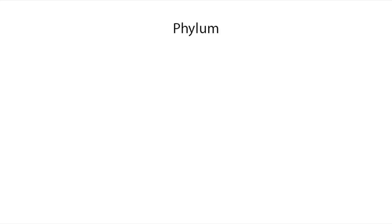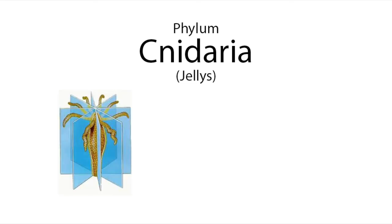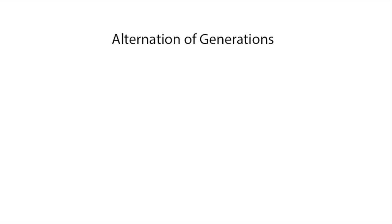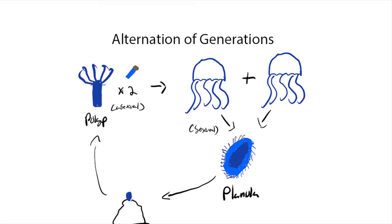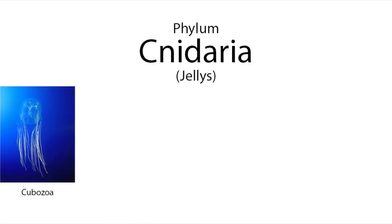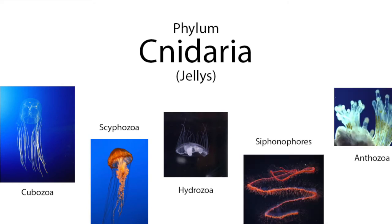Next are the diploblastic animal phyla, or animals with two cell layers in their embryos. Cnidarians are the jellies. These guys are radially symmetric and have harpoon-like stinging cells called cnidocytes. Some of these guys have alternation of generations, where the animal cycles between jellyfish and anemone. There are five groups: box jellyfish, bushy marine jellyfish, the diverse hydrozoan jellyfish, siphonophores, and anemones — which include coral too.